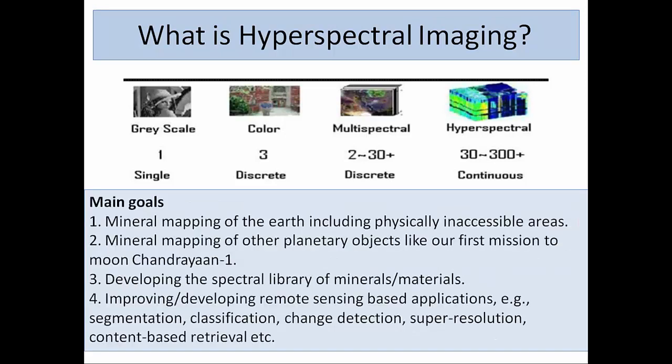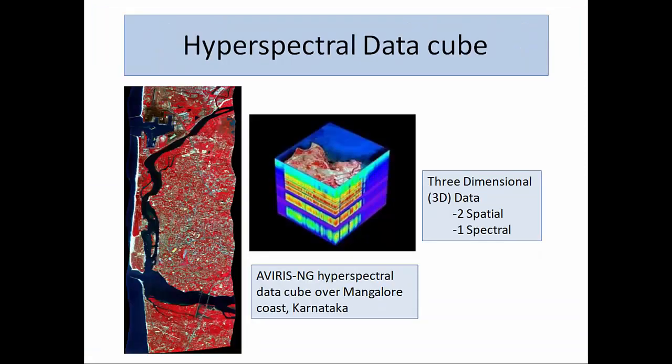You can say that hyperspectral imaging is nothing but spectroscopy, and the main goal is target detection. It may be used for mineral mapping, water quality assessment, or urbanization. Different applications are there: segmentation, classification, and same detection can all be applied in hyperspectral imaging.